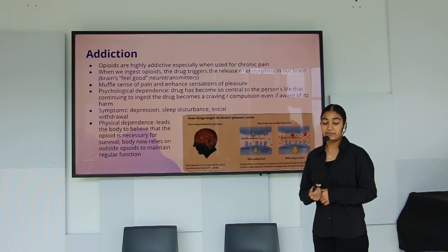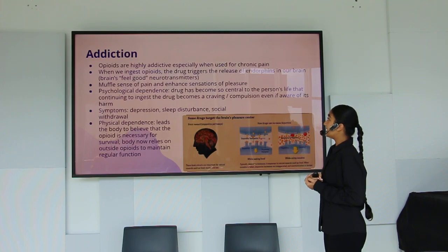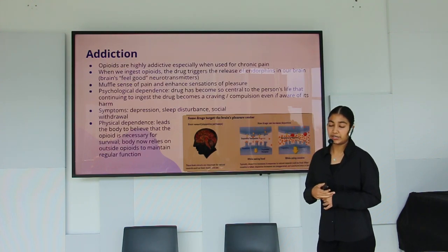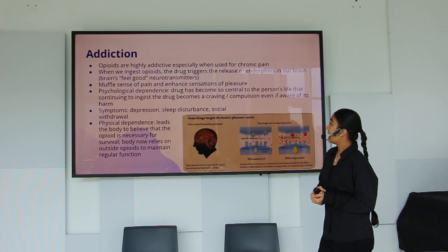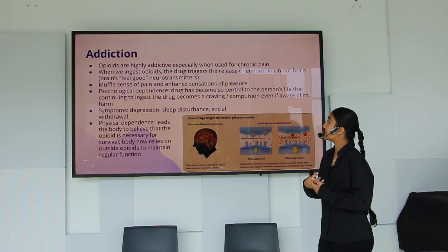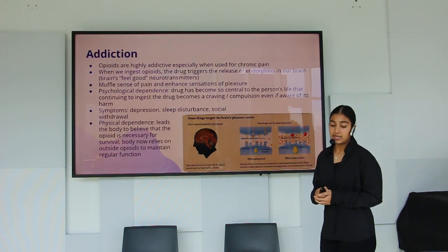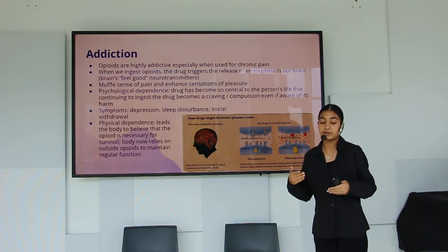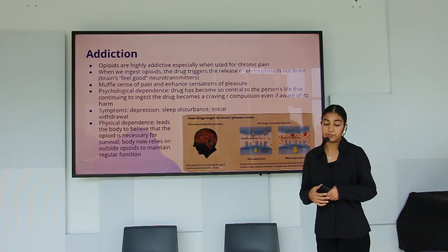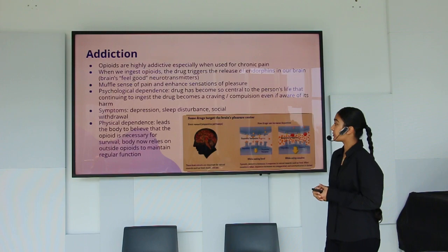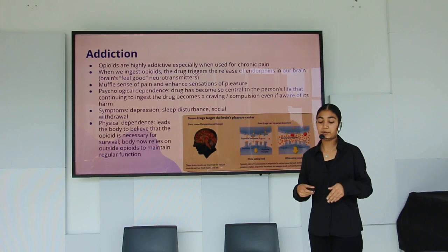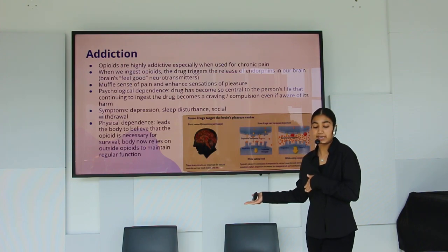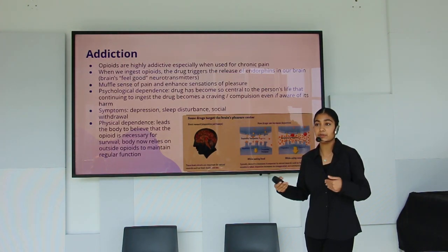Opioids affect us primarily through addiction. When ingested, they trigger the release of endorphins — the brain's feel-good neurotransmitters — muffle pain, and enhance pleasure, causing us to want more. This is where psychological dependence comes in: the drug becomes central to the person's life as a craving and compulsion, even when aware of its harm. Symptoms include depression and social withdrawal. Physical dependence then follows, as the body comes to believe the opioid is necessary for survival and can no longer maintain regular function without it.